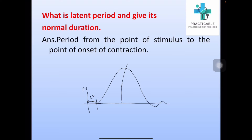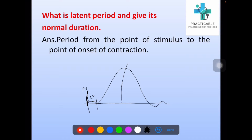What is latent period and give its normal duration? It is the period from the point of stimulus — see the graph — from the point of stimulus to the point of onset of contraction. This is the latent period. Its normal duration is 10 milliseconds.